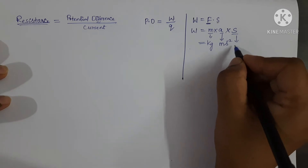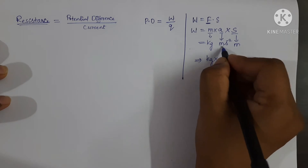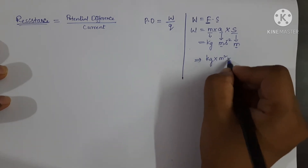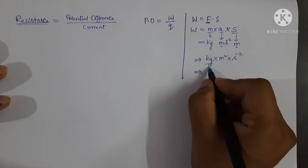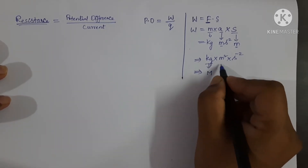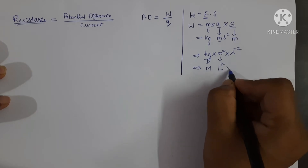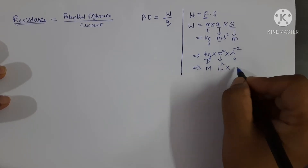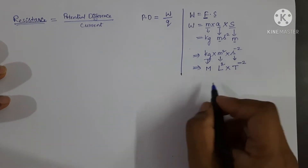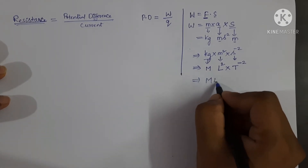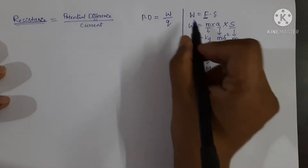For displacement, meter. So work done equals kilogram into meter into meter squared into second power minus 2. Writing in dimensions: kg is M, meter is L, meter squared is L squared, and second is T, giving T power minus 2. So the dimensional formula for work done is M L squared T power minus 2.